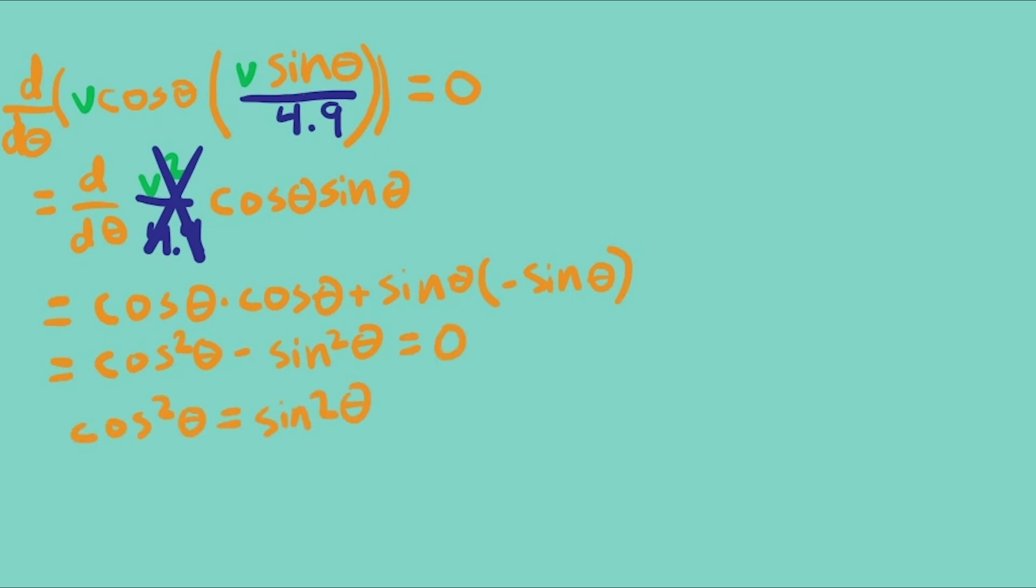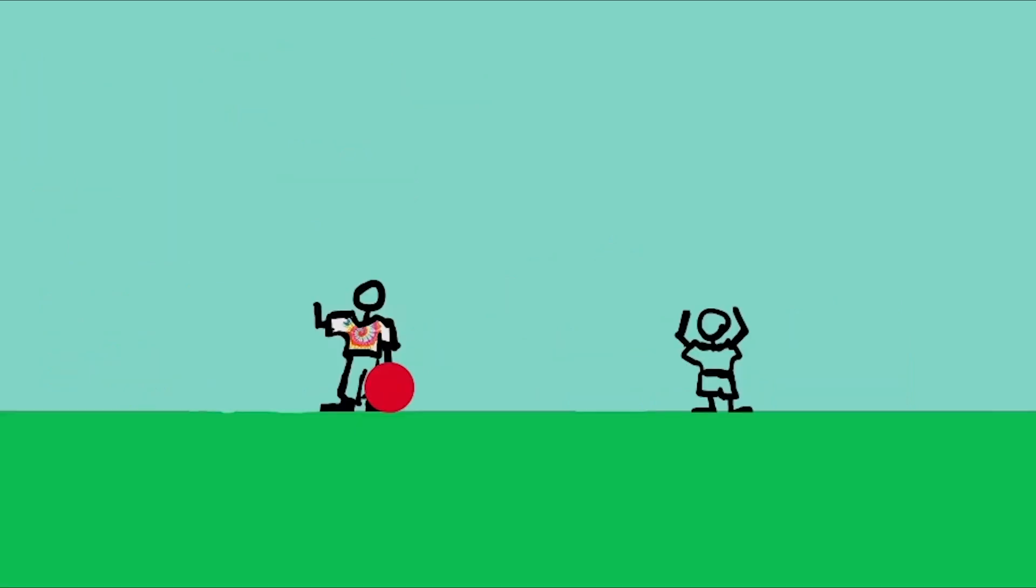We can eliminate the constant and end up with sine squared of theta equals cosine squared of theta. Well, that's true when sine equals cosine, which is at 45 degrees. Or when sine equals a negative cosine, so at a negative 35 degrees, which is the same as kicking the ball backwards at 45 degrees. One gives the maximum distance, the other the minimum distance.